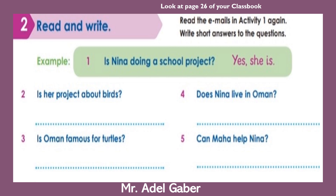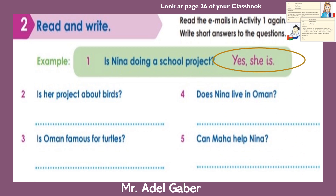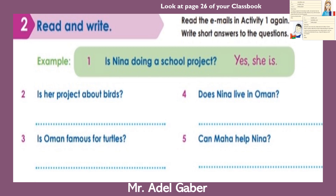Look at page 26 of your class book, activity two: read and write. Read the emails in activity one again and write short answers to the questions. Example: is Nina doing a school project? Yes, she is. Your answers should be short, use capital letters, and follow full stops. Stop this video — you have three minutes to do this task in your exercise book.